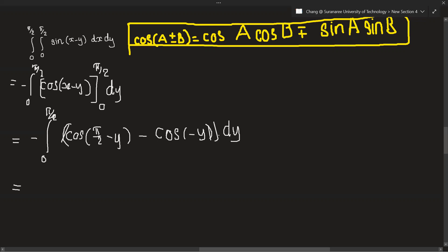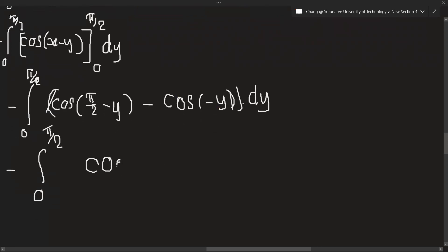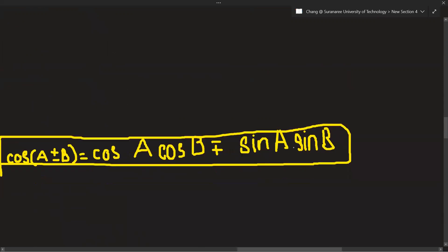x times 0.5 over 2 minus 0.25 over 2. x times 0.5 over 2 minus 1, times 0.5 over 2 minus 1. y0 cos(a plus b1), cos equals 0, cos a 0, plus 1, minus 1, plus sin a, sin b1.